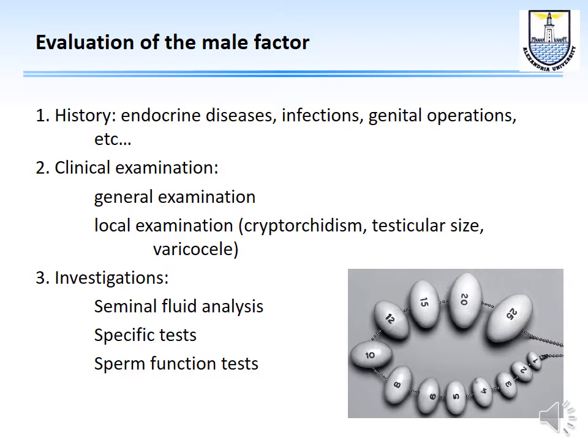To evaluate the male factor, we take a thorough history covering endocrine diseases, infections, genital operations, and anything that may affect male fertility. We then do clinical and local examination — looking for cryptorchidism, testicular size using an orchidometer, or varicocele. Investigations include the most important test: semen fluid analysis. If abnormal, we proceed to specific tests and sperm function tests.